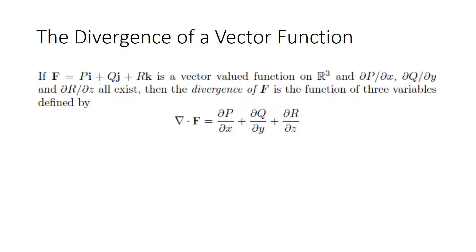The divergence of a vector function. If f equals a function p in the i direction, a function q in the j direction, and a function r in the k direction — a vector-valued function on R3 — and the first partial derivatives exist, specifically the partial of p with respect to x, the partial of q with respect to y, and the partial of r with respect to z, then the divergence of f is defined as the sum of those partial derivatives: del dot f equals the partial of p with respect to x, plus the partial of q with respect to y, plus the partial of r with respect to z.